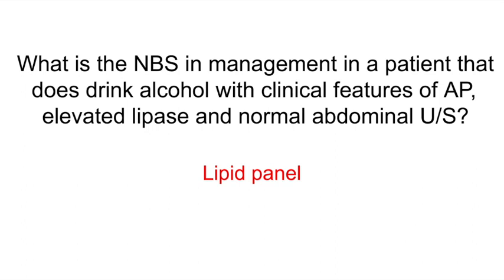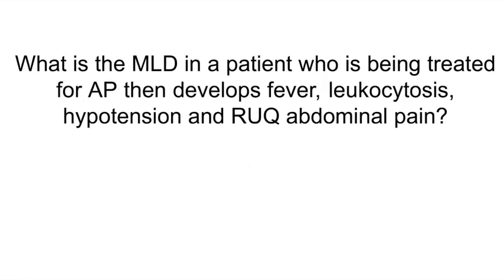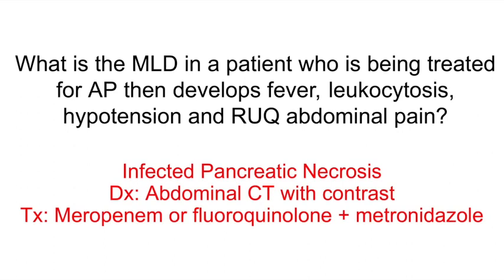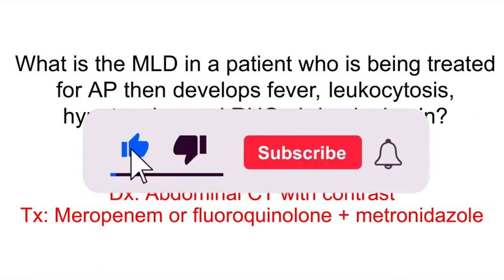What is the most likely diagnosis in a patient being treated for acute pancreatitis who then develops fever, leukocytosis, hypotension, and right upper quadrant abdominal pain? Infected pancreatic necrosis. To diagnose this condition, do an abdominal CT scan with contrast. For treatment, you can give meropenem or a fluoroquinolone plus metronidazole.